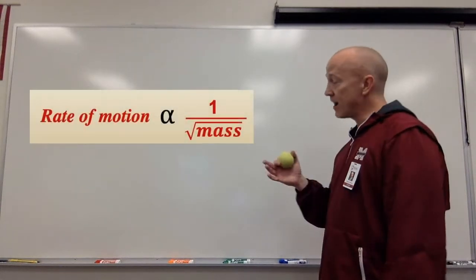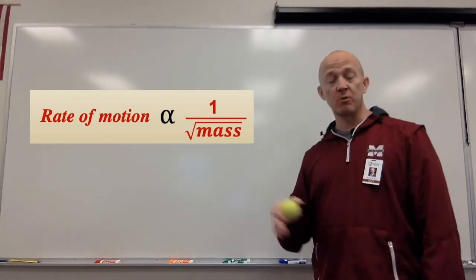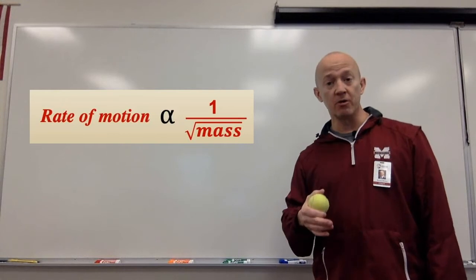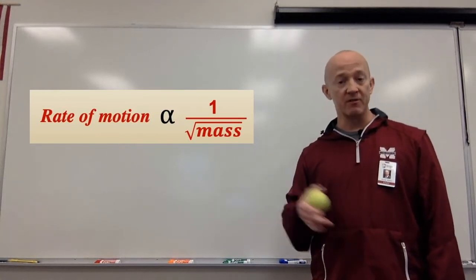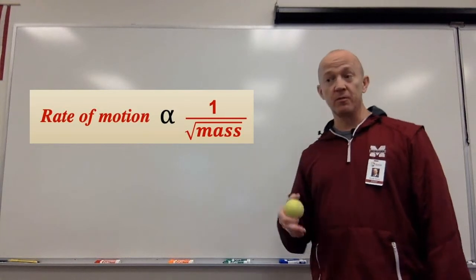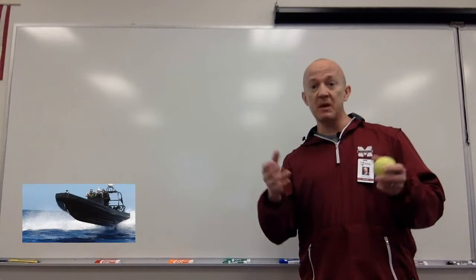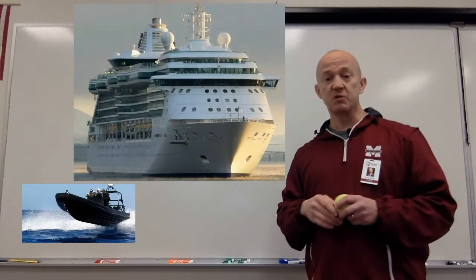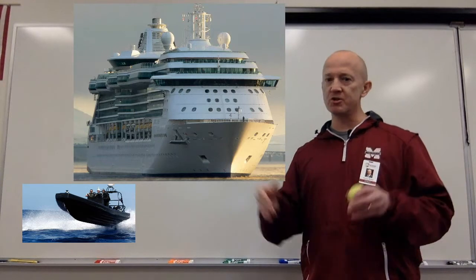Or we can put it this way. The rate of motion is proportional to one over the square root of the mass. In other words, there's an inverse relationship between mass and the rate of motion. The larger the particle, the slower it goes. You can remember this by thinking of a speed boat versus a cruise ship. The speed boat is small, but fast. The cruise ship, very large, but slow.